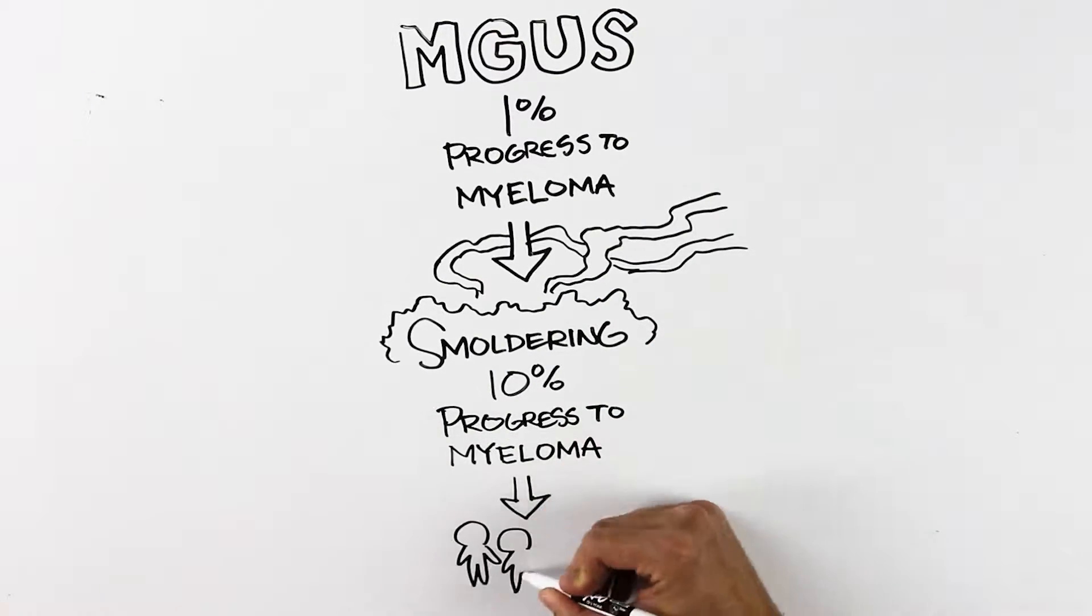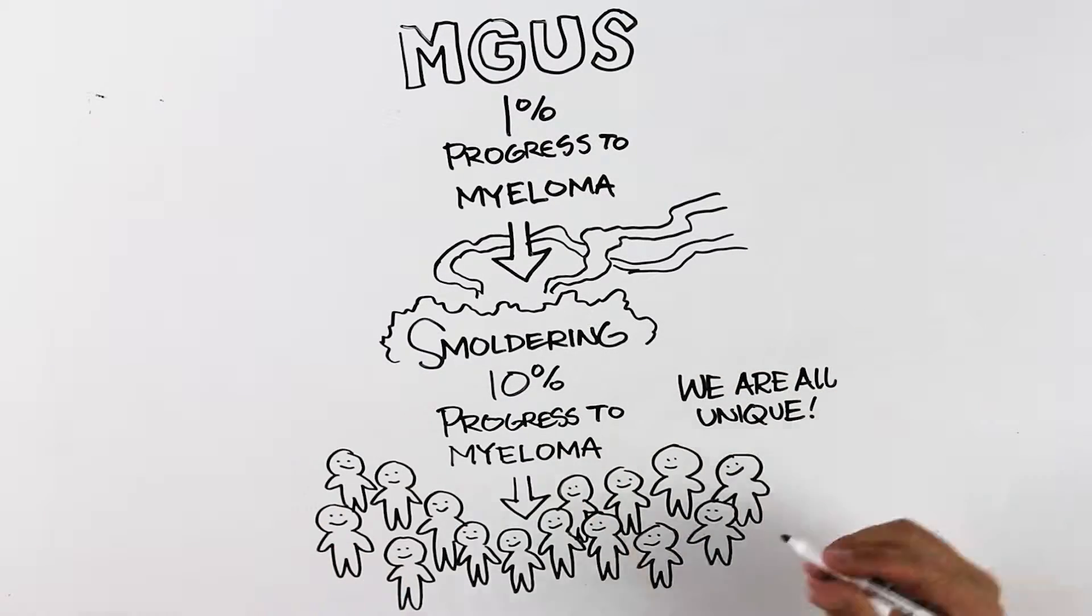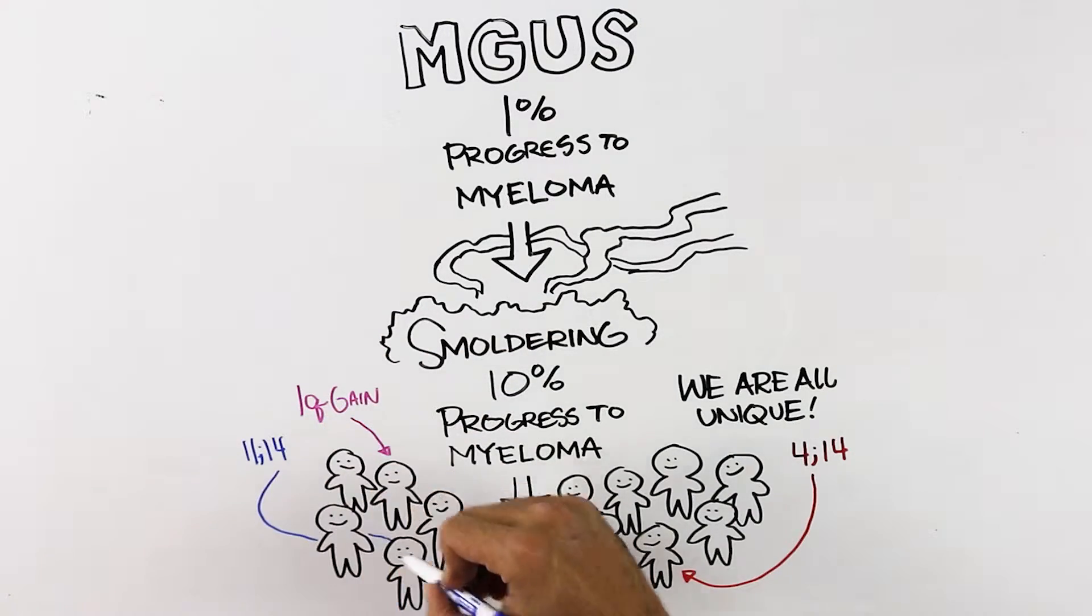Multiple myeloma is not a single disease. There are different genetic types of myeloma. Some are normal risk, and some are high risk where chromosomes get swapped or deleted. So no myeloma patient is exactly the same.